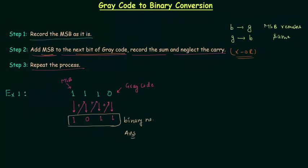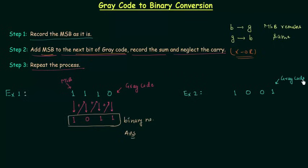Now we will move to example number two. In this example we will perform the XOR operation. The gray code in this example is 1001. We will convert this gray code to binary. First, we record the MSB as it is, so we have 1.